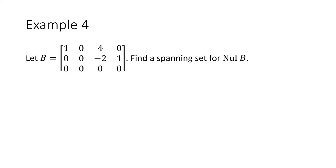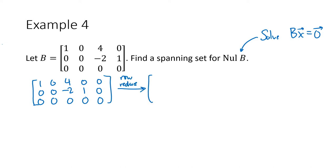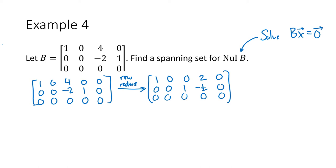Let's practice one more time with a slightly simpler matrix B. I want to find a spanning set for the null space of B, so I solve Bx = 0. Setting up my augmented matrix with entries 1, 0, 0, 0; 0, 4, -2, 0; 0, 1, 0, 0, with a column of zeros appended, then row reducing. After a scale and a replace operation, we get our reduced matrix.